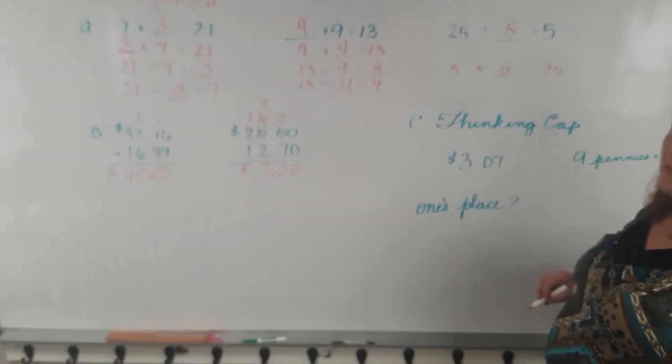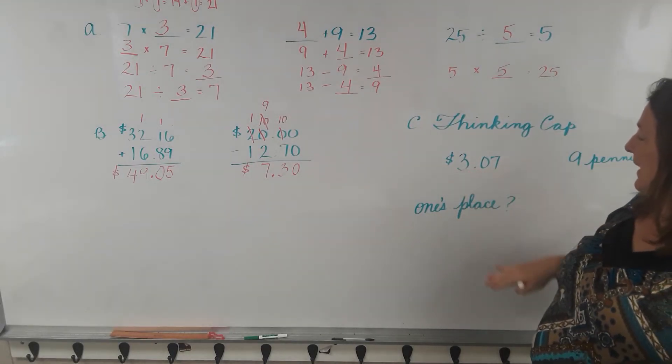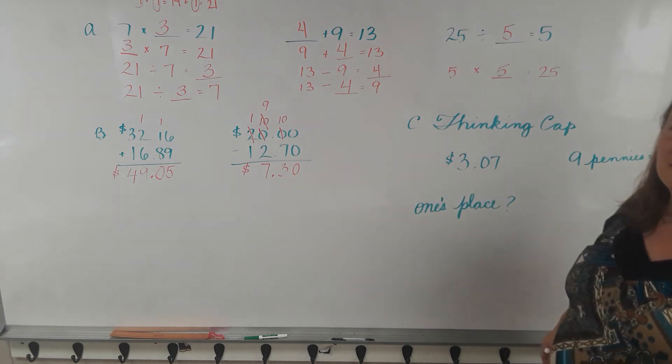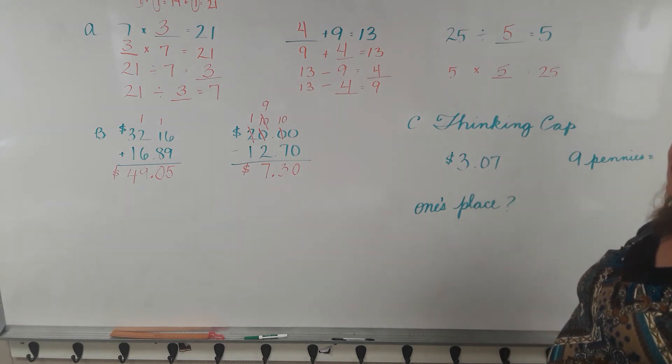Let's put on our thinking caps. We have 3 dollars and 7 cents. Which number here is in the ones place? This is a little bit tricky.